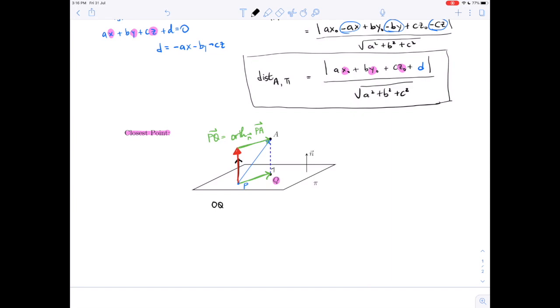So one way to find point Q: if we want the position vector of OQ, that is the position vector of OP plus PQ. But PQ, we just said, is the orthogonal component. So OP plus the orthogonal of PA relative to N. So that is one way of finding the position vector of Q.